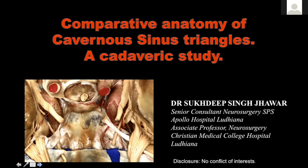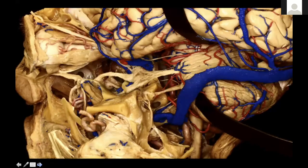As you all know, the skull base is a very vast area. Within the skull base, we have the cavernous sinus as the main area. The internal carotid artery is the main artery which enters from outside, travels in the petrous bone, then through the cavernous sinus, then goes intracranially. Most of our discussions in the skull base are focused around the internal carotid artery, especially in endoscopic approaches.